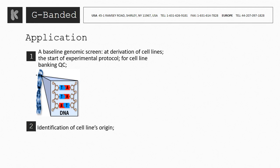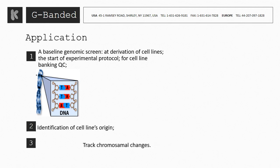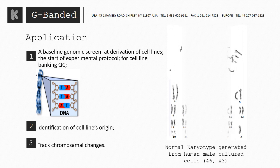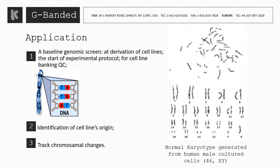Second, identification of cell lines' origin. Third, to track chromosomal changes. As the picture shown, the normal karyotype was generated from human male cultured cells.